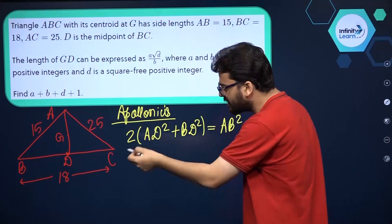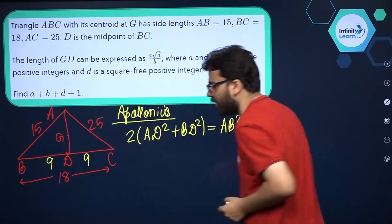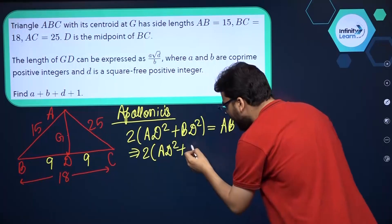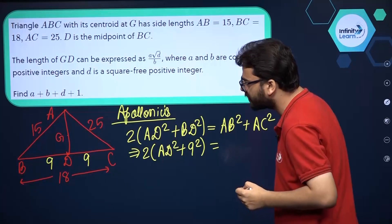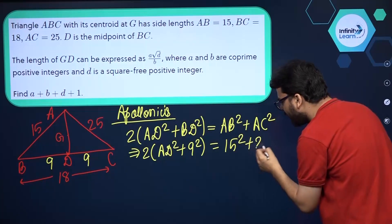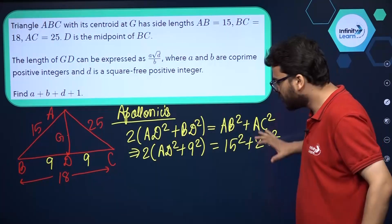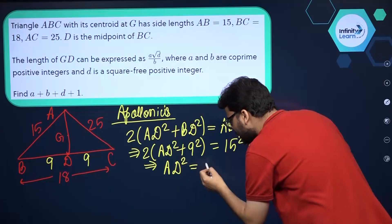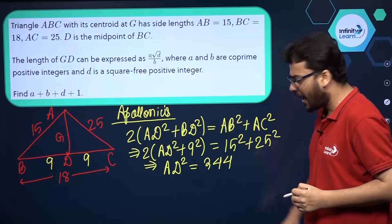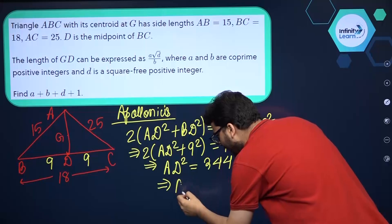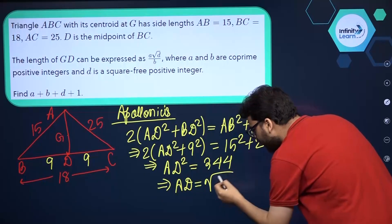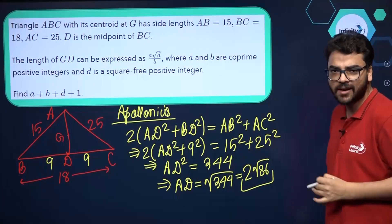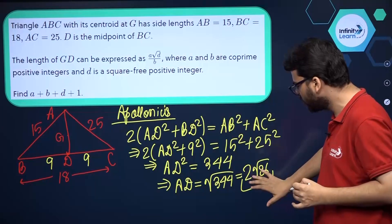D is the midpoint of BC and BC is equal to 18, so BD equals 9 and CD equals 9. Substituting: 2 into AD squared plus 9 squared equals 15 squared plus 25 squared. After simplification, AD squared equals 344, so AD equals the square root of 344, which simplifies to 2 root 86 units.